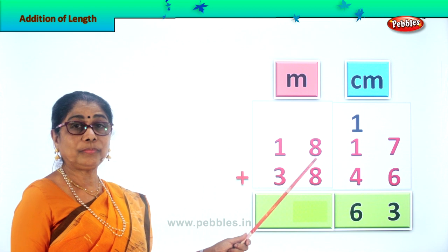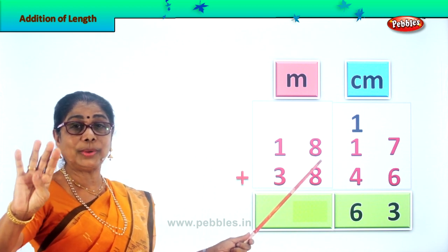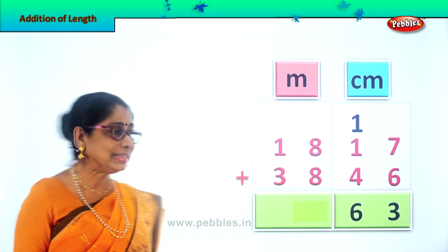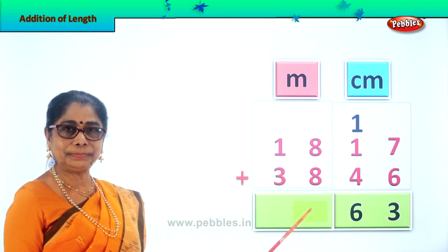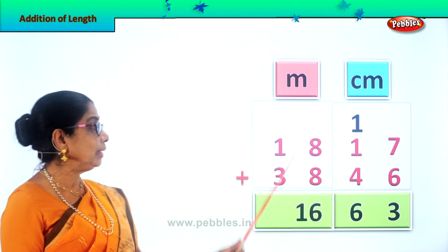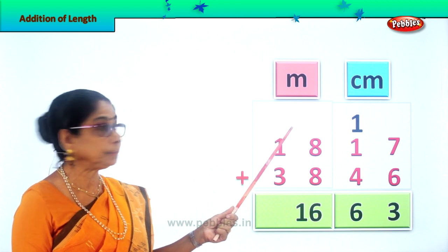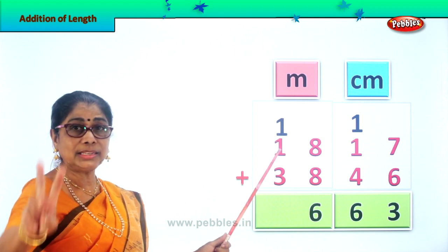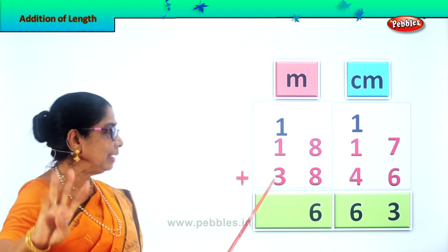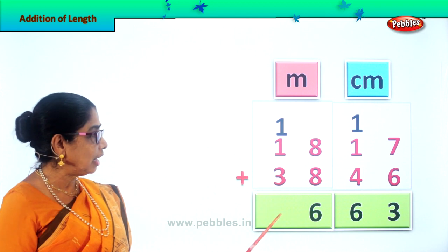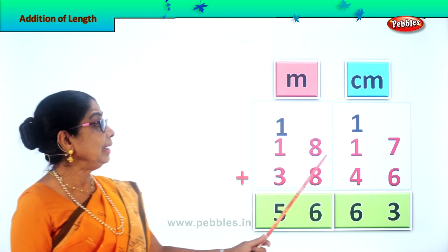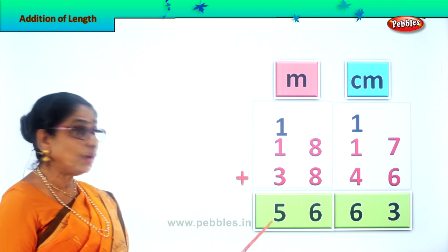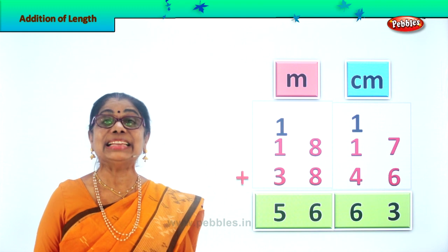Now we go to the meter side. 8 plus 8 is 16. We leave the 6 over here and take the 1 ten over. Now let's add all of them: 1 plus 1 is 2, 2 plus 3 is 5. So we write down 5 here. 18 meters and 17 centimeters plus 38 meters and 46 centimeters is equal to 56 meters and 63 centimeters. That is your answer.